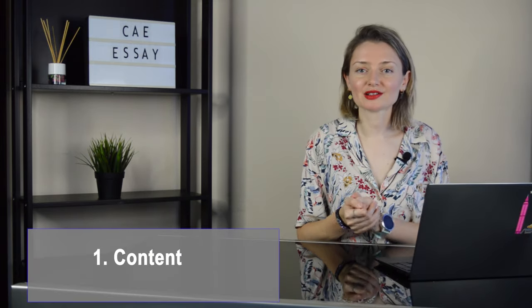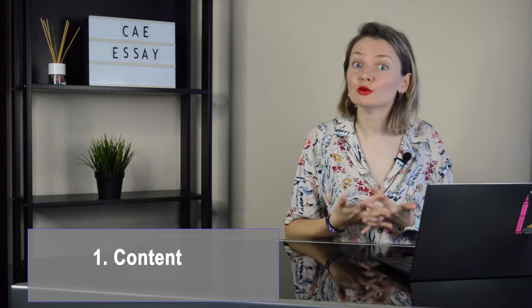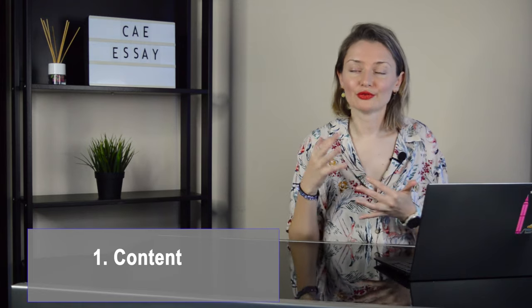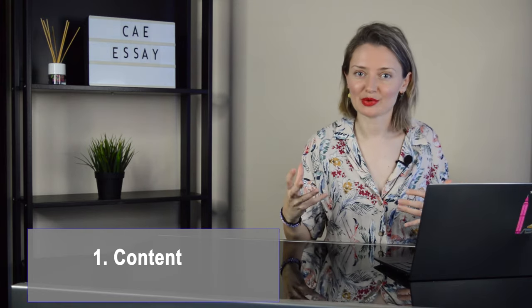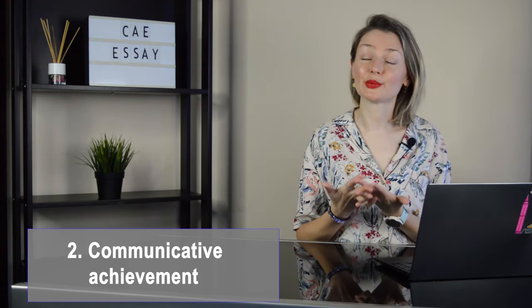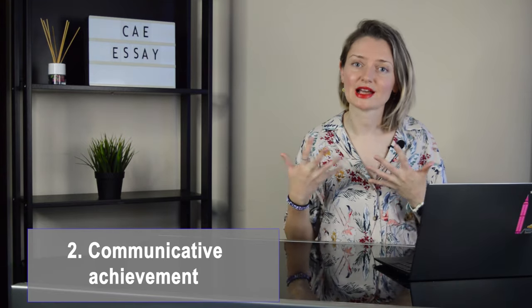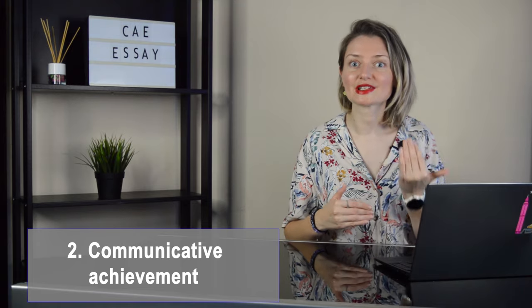Part two: how is it assessed? Examiners will mark your writing using the following four scales. Number one: content. Here examiners will look at whether you've done everything you were asked to do, if content is relevant to the task, if the reader is fully informed, and also if you've added your own ideas and examples. Number two: communicative achievement. Here they're going to look at your style — if it's appropriate, in this case it's going to be a formal style — if the writing is appropriate for the task, if you can express complex ideas, and if you can hold the reader's attention with ease.